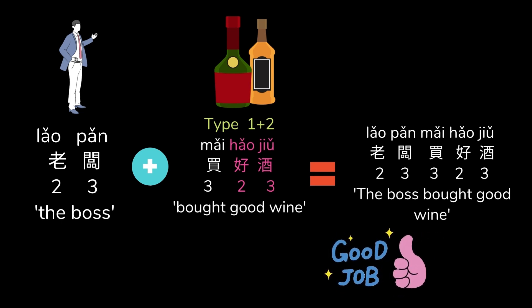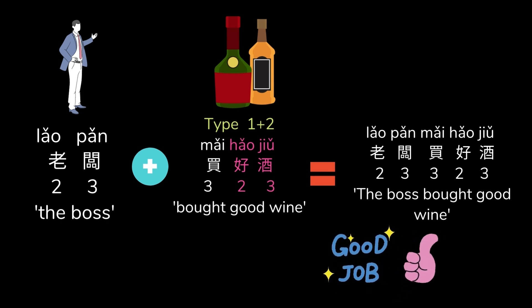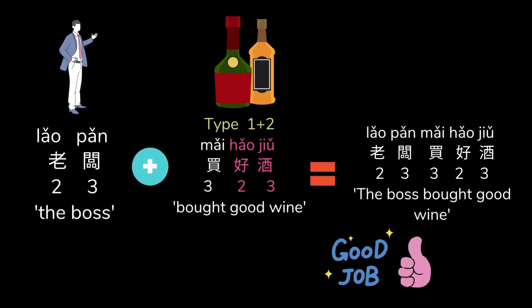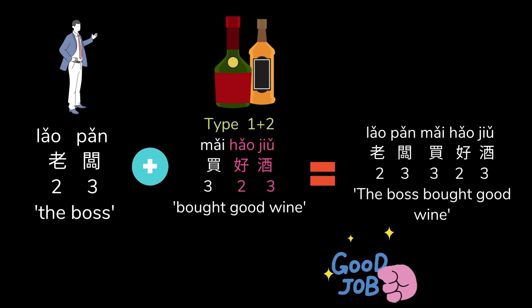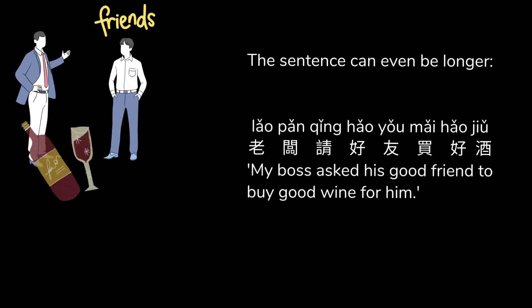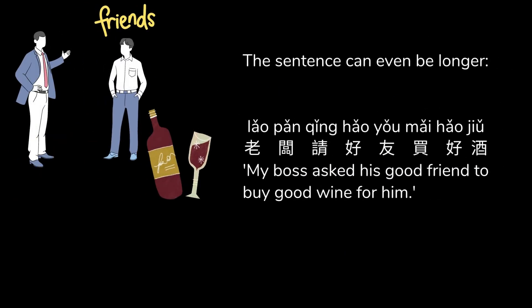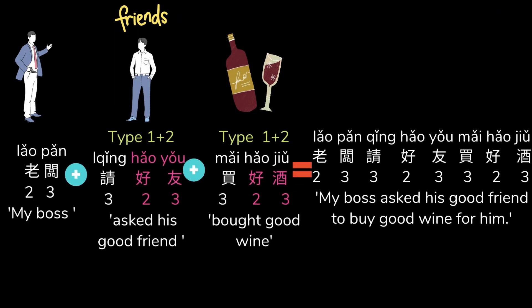As an illustration, we split the phrase into two parts: 老板 and 买好久. You now know that the tone of 老板 is commonly pronounced as second-third, and that 买好久 is a one-plus-two type and its tone is third-second-third. As a result, the full phrase is pronounced second-third, third-second-third: 老板买好久.